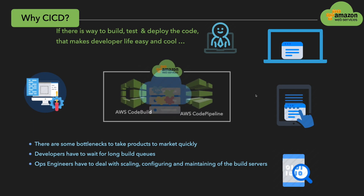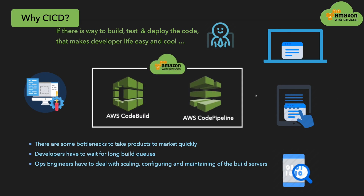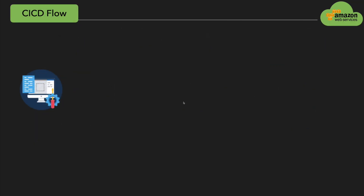Wouldn't it be nice if there is a tool which can automate the complete process to build and test your code? That makes a developer's life easier and simpler so that they can put more focus on building the product and implementing the business logic. That is where AWS CodeBuild and AWS CodePipeline come into picture. In the next slide, we are going to see how we can build this complete flow.